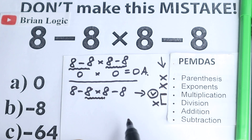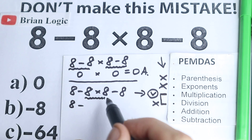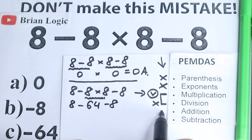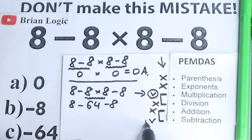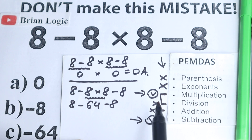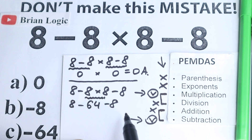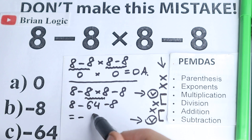We have a multiplication step, which is really important — we should multiply first. So we have 8 times 8 equal to 64, giving us 8 minus 64 minus 8. As you can see, multiplication is before subtraction in PEMDAS — you should always do all multiplication and division first, and then go to addition and subtraction, which is our last step. So 8 minus 64 minus 8 equals minus 64.